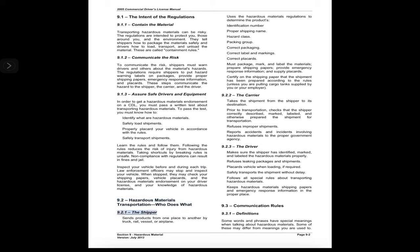When stopped, officers may check your shipping papers, vehicle placards, the hazardous materials endorsement on your driver license, and your knowledge of hazardous materials. Section 9.2: Hazardous Materials Transportation — Who Does What. 9.2.1 The Shipper sends products from one place to another by truck, rail, vessel, or airplane. The shipper uses the hazardous materials regulations to determine the product's identification number, proper shipping name, hazard class, packing group, correct packaging, labels, markings, and correct placards.